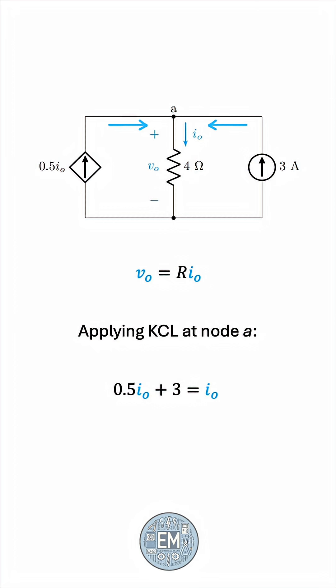This gives us IO equals 6 amperes, and with that, we can find VO by multiplying 4 ohms by 6 amperes, giving us 24 volts.